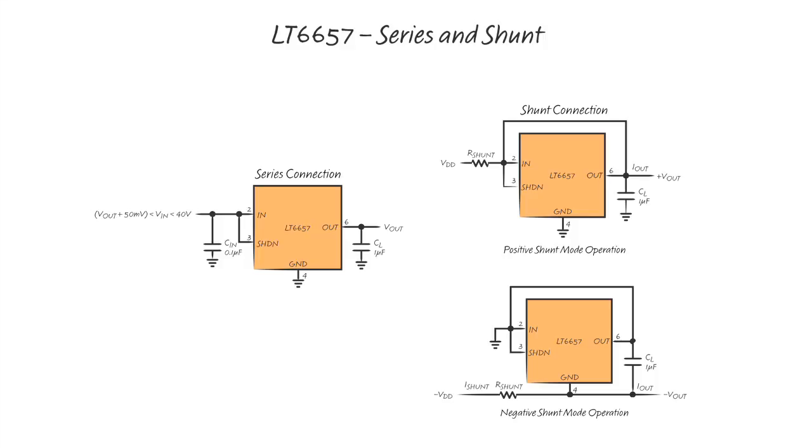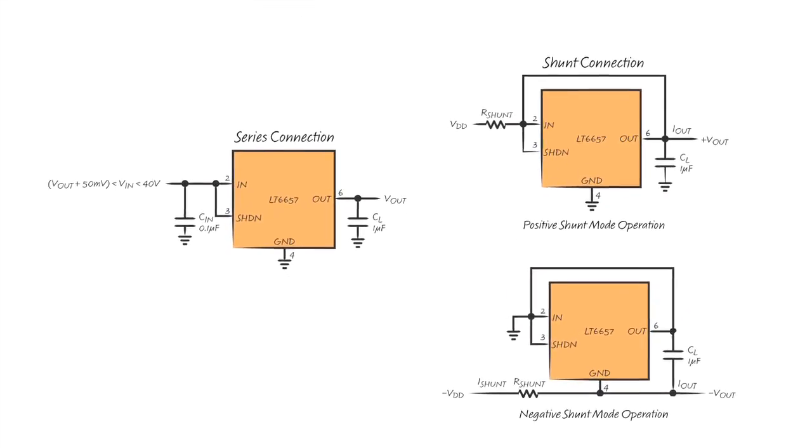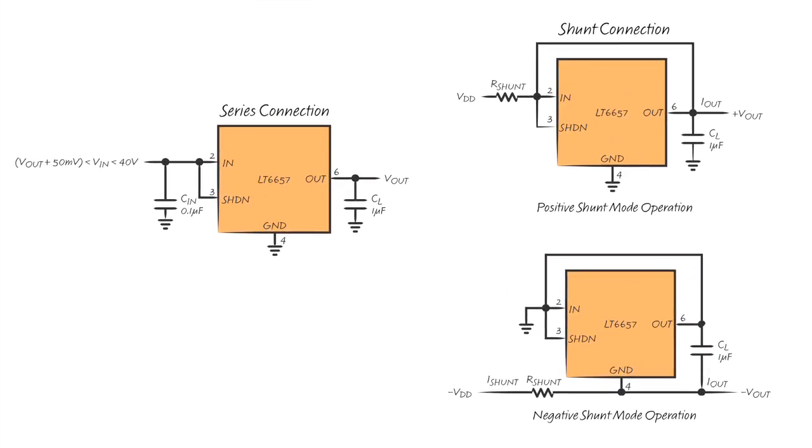Finally, LT6657 works as a shunt as well as a series reference. Shunt mode operation makes it easy to configure a negative voltage reference, work from a very high supply voltage, or retrofit an older design to give improved performance.